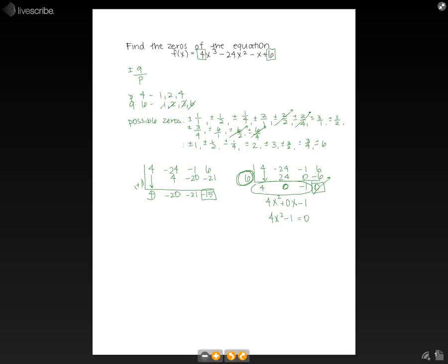We'll set that equal to 0 and solve. So if we add 1 to both sides, we'll get 4x² = 1. Divide each side by 4, get x² = 1/4. If we take the square root of both sides, we'll get x = ±1/2. So here's our other two zeros. So our zeros for this equation were positive 1/2, negative 1/2, and 6.